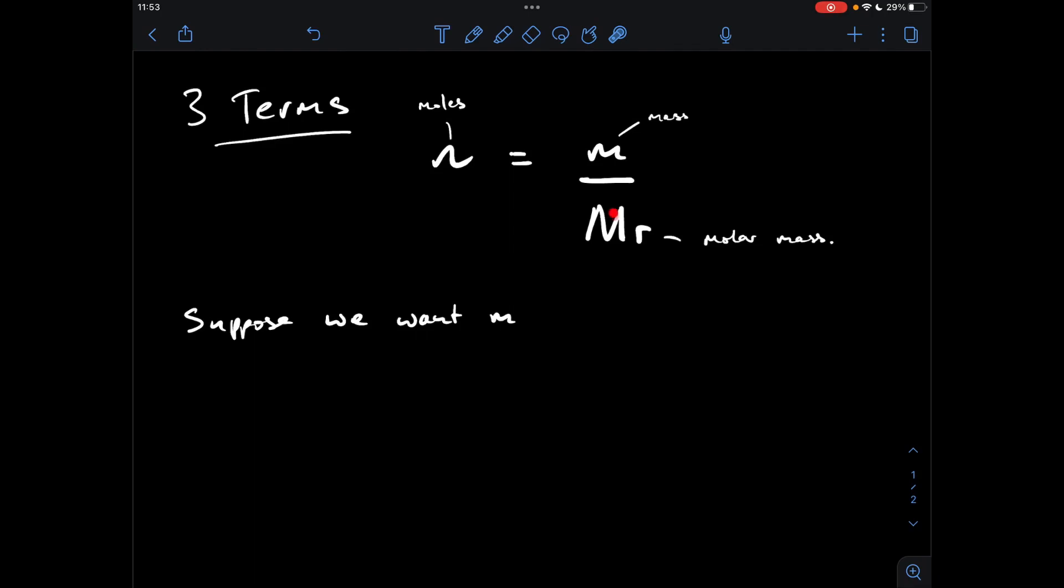So obviously the problem we've got at the moment is this Mr is in the way, so we need to get it out of the way, we need to get it over to the other side of the equation, so that leaves m by itself. So how do we do that? We need to multiply both sides of the equation by Mr.